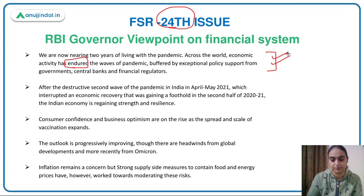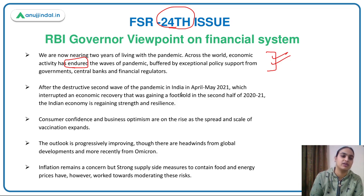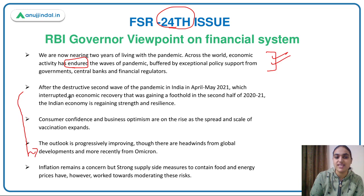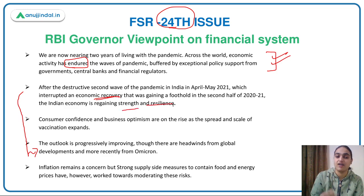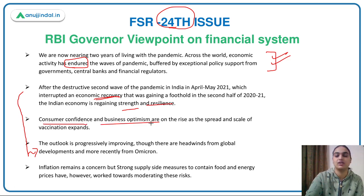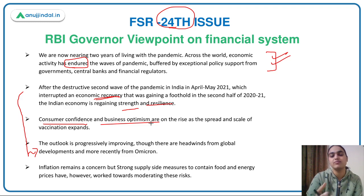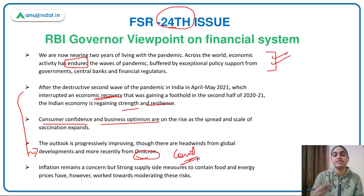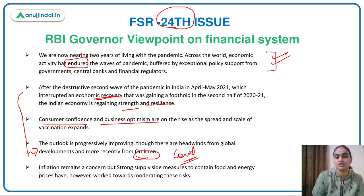The Governor further says that after the second wave of the pandemic, India's economy started recovering — consumer confidence started building up and businesses turned optimistic as vaccinations came. But as this outlook was improving, new problems are emerging, like the new variant of COVID, which can pose various problems for economies, and support from governments and central banks may be needed again.